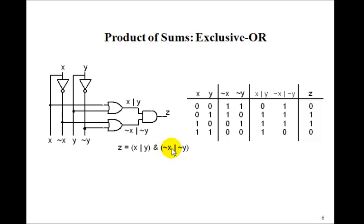And then here we need not x or not y. So we'll connect this to not x, connect this input to not y. And then the output z is just the and of those. So this is a different circuit than we had for the sum of products. But they both produce the exclusive or.